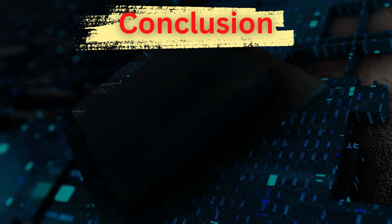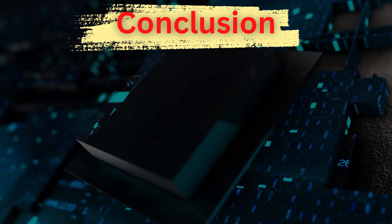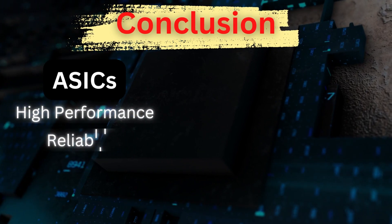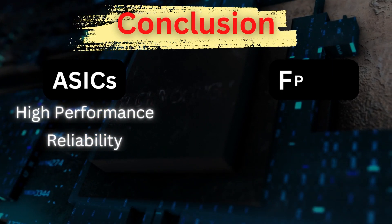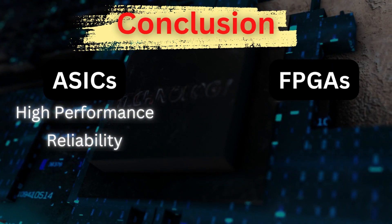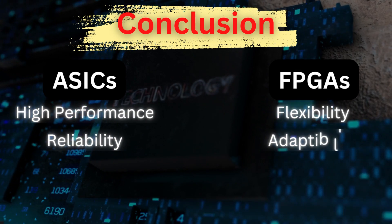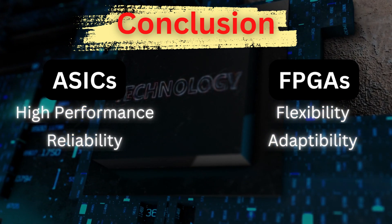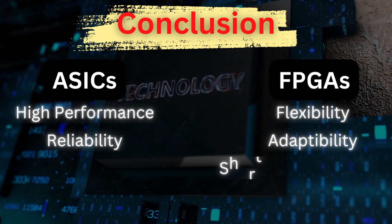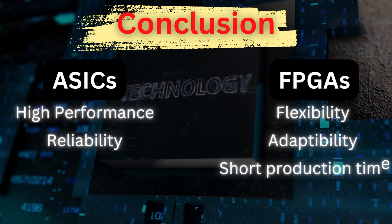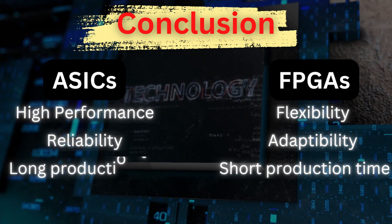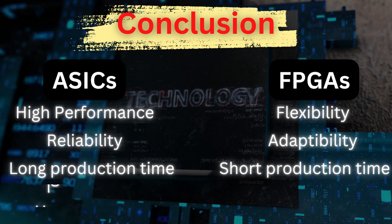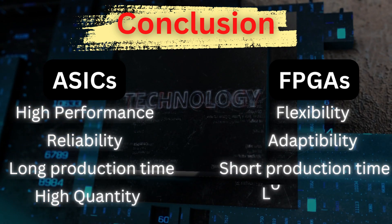The last question is: which one to choose for a particular application? ASICs offer high performance and reliability for specific tasks, while FPGAs offer flexibility and adaptability for multiple applications. If you only have weeks to deliver your product, choose FPGA. If you have months, ASICs is the better option. If the product requires a large quantity of chips, choose ASICs. If quantity is low, choose FPGAs.